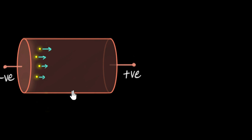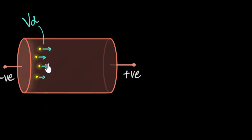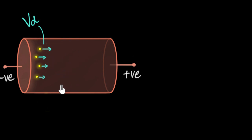So now let's think about what that current would depend on. Clearly, it would depend on the drift velocity Vd. That's because if this average drift velocity of the electron is higher, then we would expect more charges to flow by per second, and so higher current. Lower means less charges flow by, so lower current.